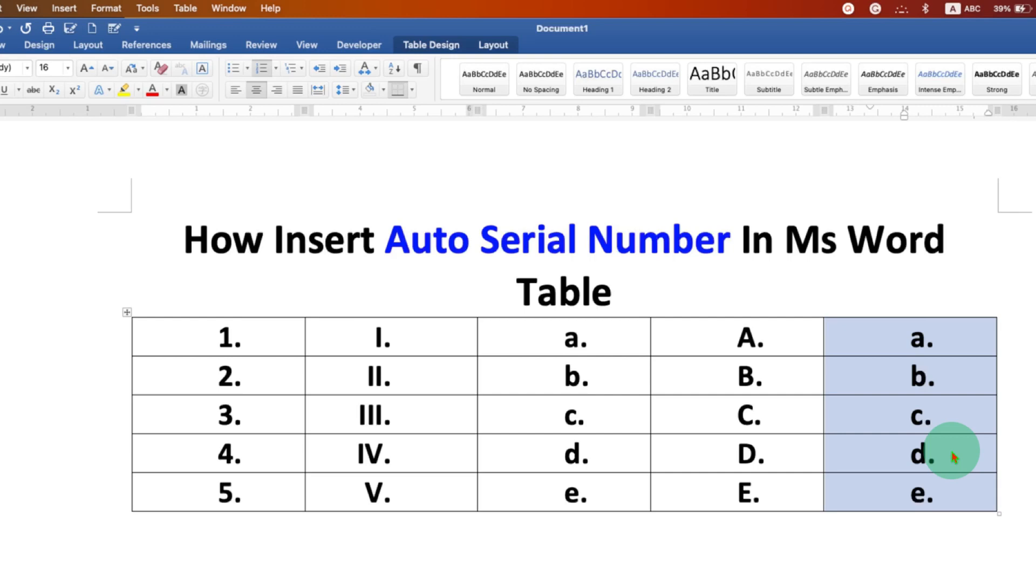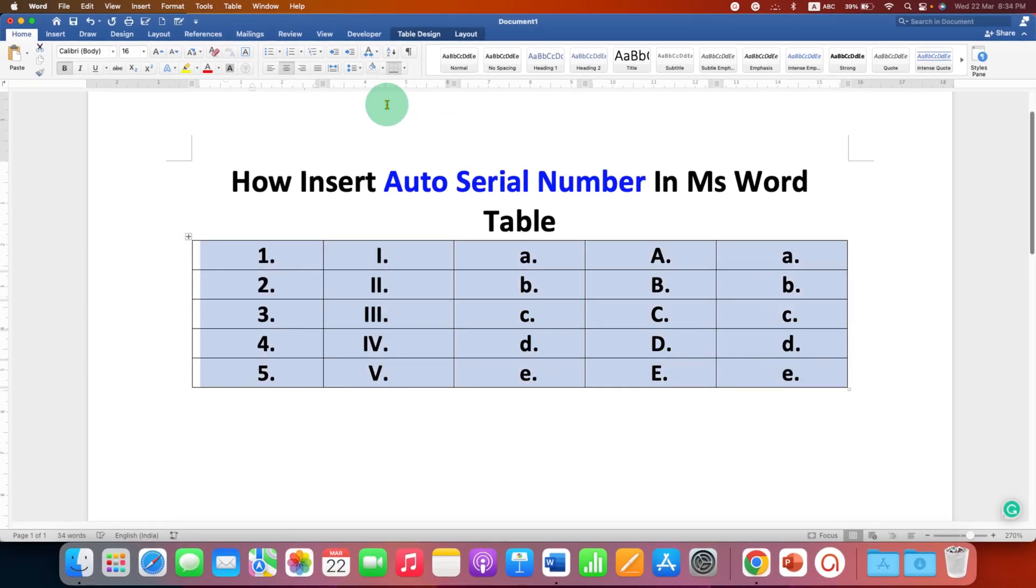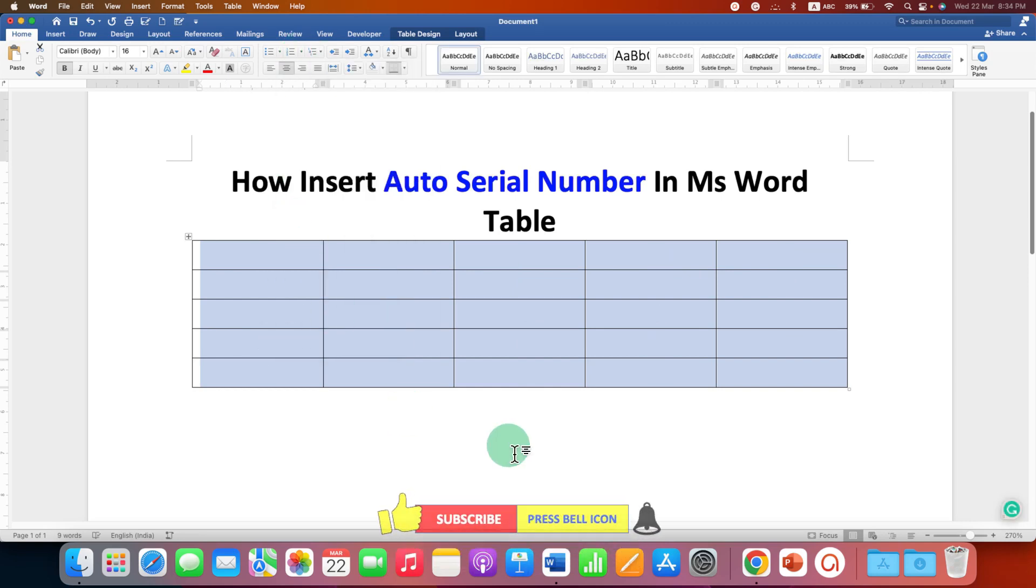If you want to remove this numbering, just select everything, and after selecting, click on the drop-down and select the option none. This will remove auto serial numbering in Word table.